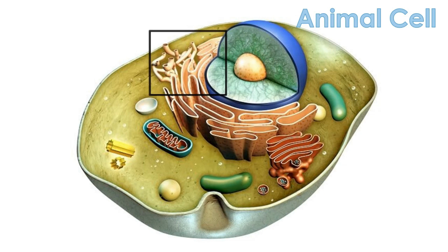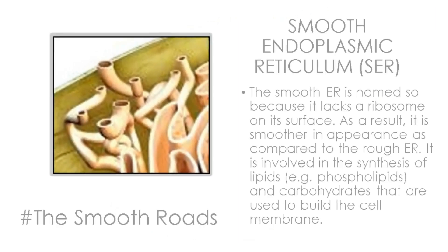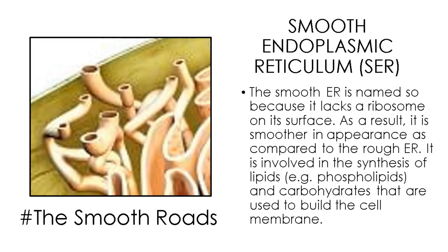The smooth endoplasmic reticulum is named so because it lacks ribosomes on its surface. As a result, it is smoother in appearance compared to the rough ER. It is involved in the synthesis of lipids and carbohydrates used to build the cell membrane. Other functions include transportation of vesicles, enzyme production in the liver, contraction of muscle cells, and synthesis of hormones in brain cells.